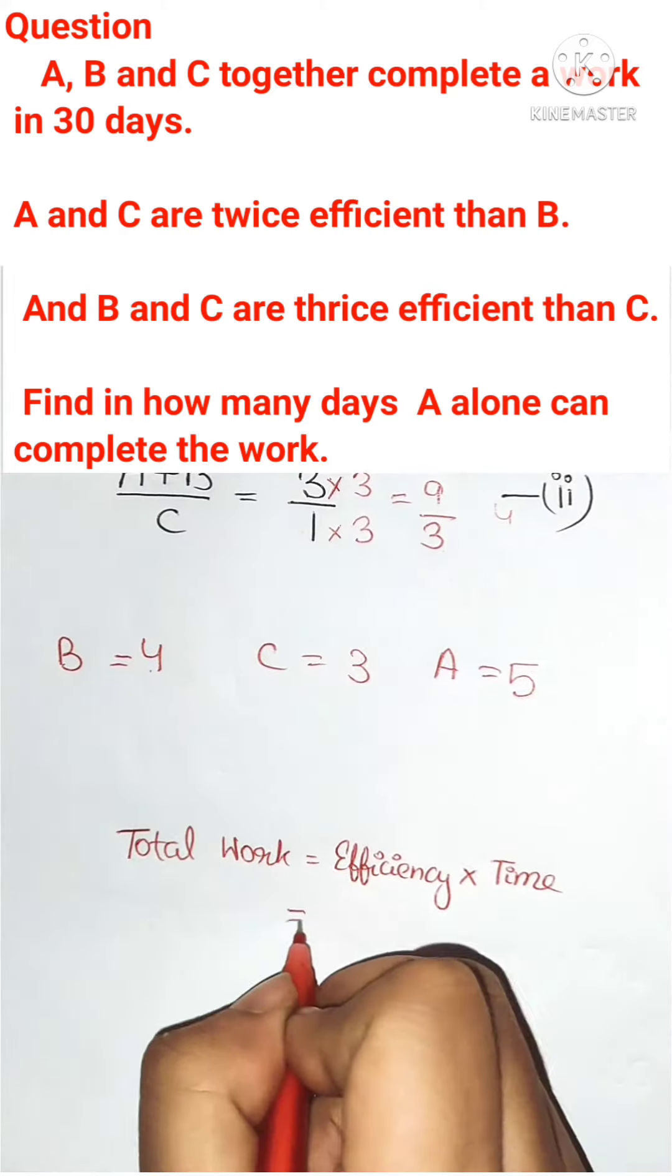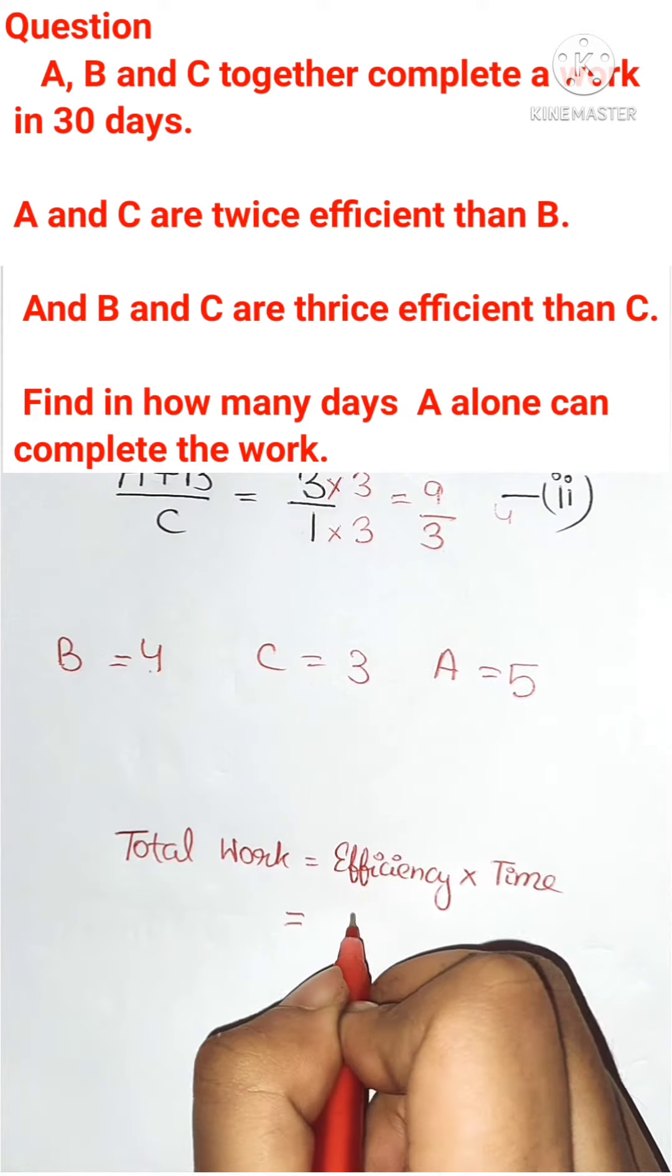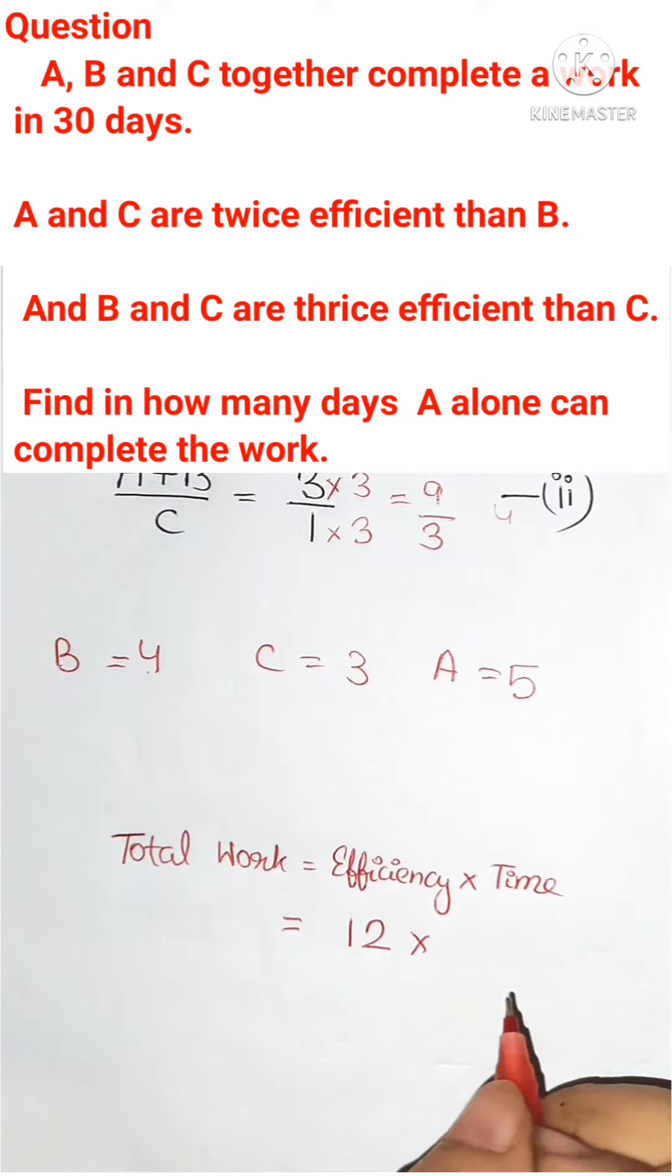We need to find out total work. Total work is efficiency into time. Total efficiency of A, B and C together is 12 here. And total time taken by A, B and C together is 30. So 12 into 30 is the total work.